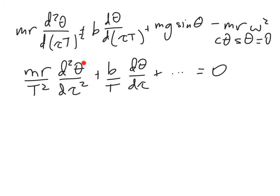d²θ/dτ² is now a unitless quotient, and dθ/dτ is also unitless. And thanks to the dimensional compatibility of all the different terms in the equation, I'm going to multiply through by T² over mr, and that's going to turn this term into something nondimensional, and everything else will become nondimensional too.